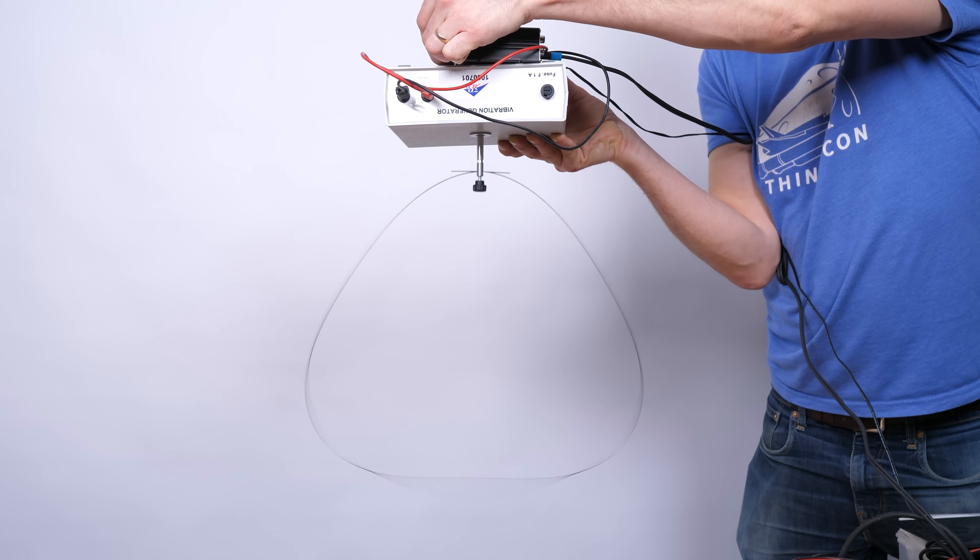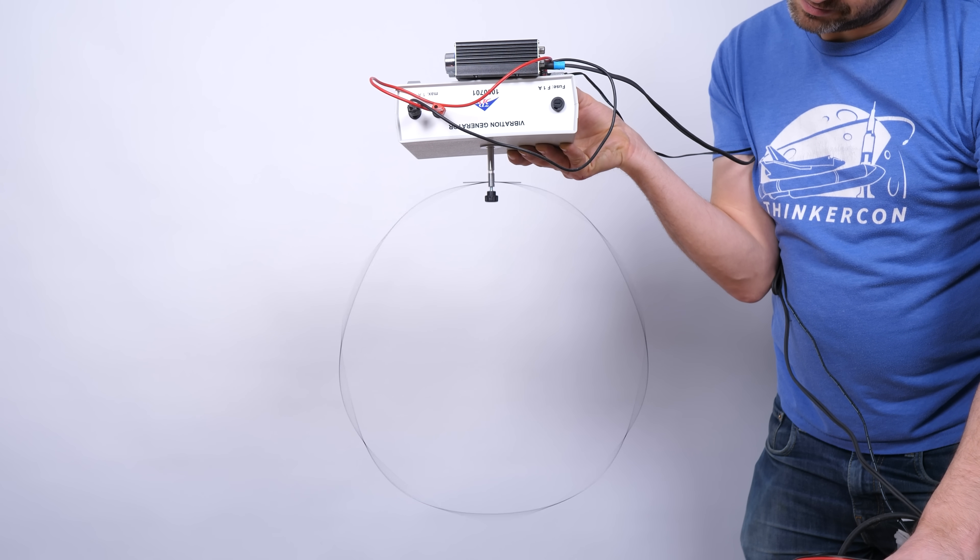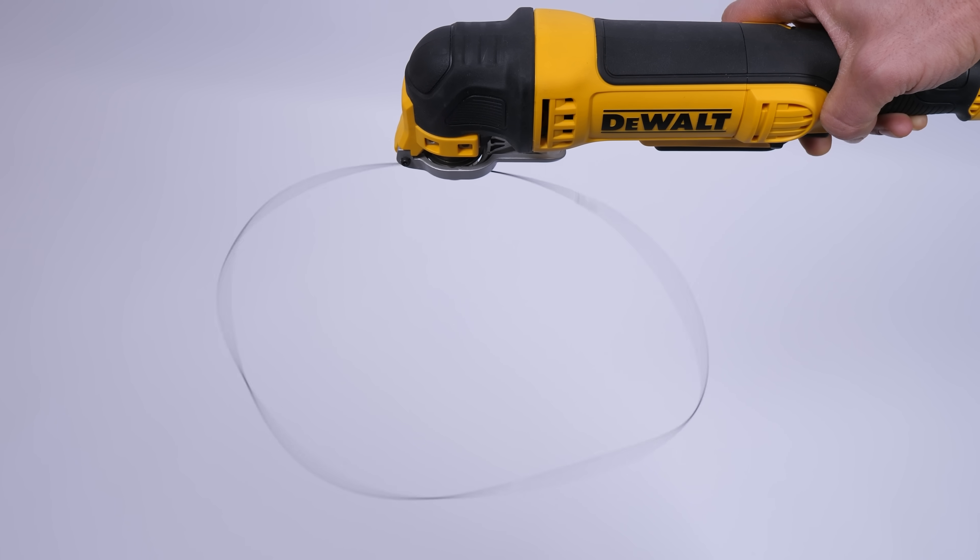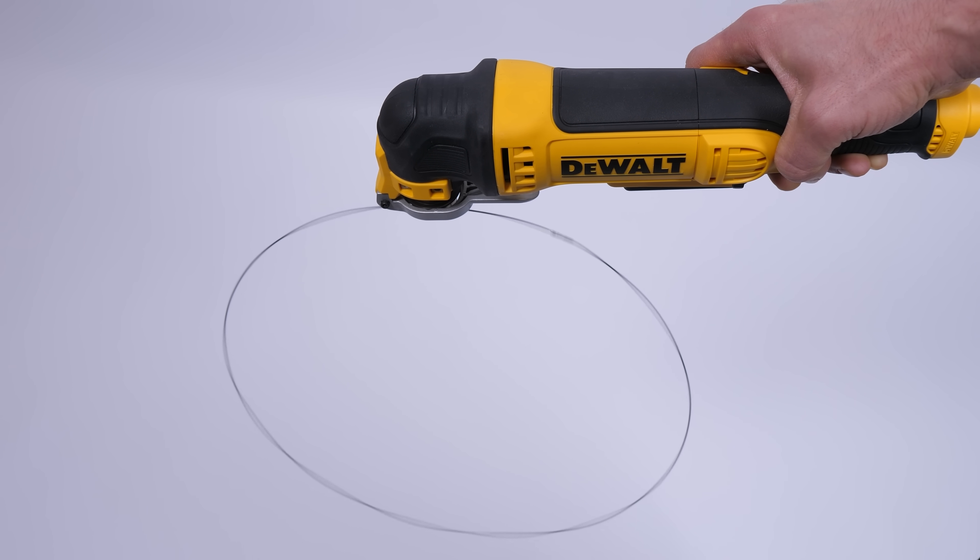With my vibration generator, I can find all sorts of different modes of this type. The twisting mode is harder to find the high harmonics of, but using this oscillating tool, I was able to get a few different modes by playing with the speed control.